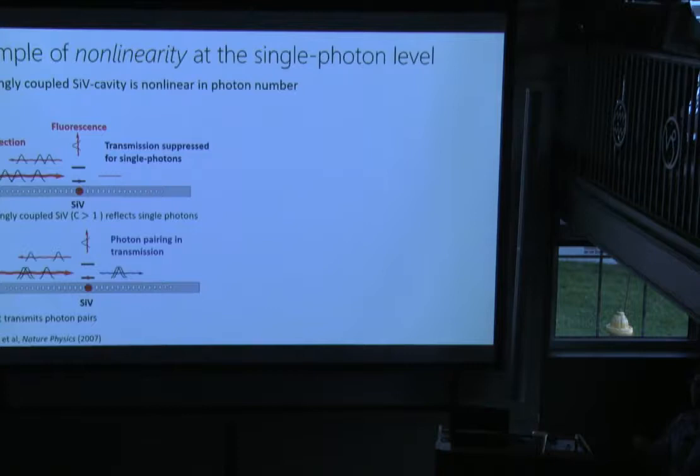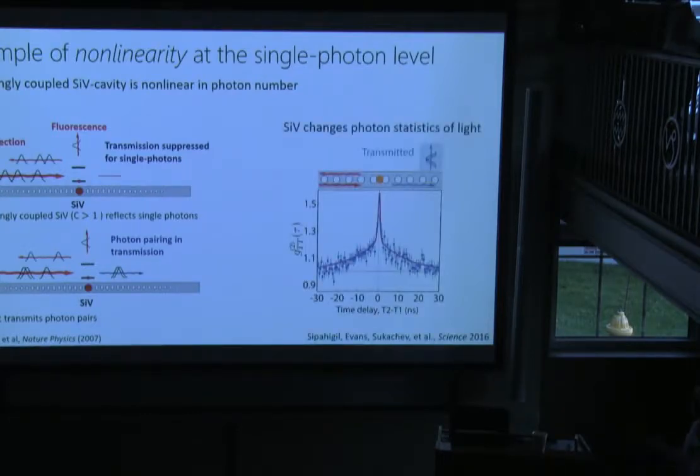If you send from the left to the cavity just very weak laser light, basically coherent light, it has a vacuum component, single photons and photon pairs. According to this picture, single photons should be reflected back and pairs should go through. You can observe this if you measure the g2 function in the transmitted light. In this g2 function, you expect bunching. If we detect one photon, the probability to get another photon right away is much higher. We have pairs in the transmission. This shows that the system can be nonlinear in the number of photons, which might help to build single photon quantum gates.